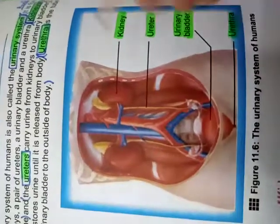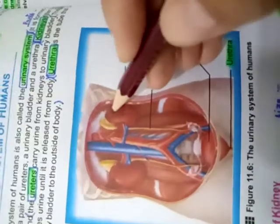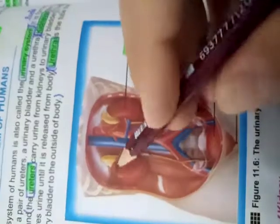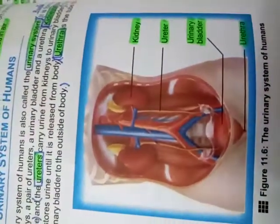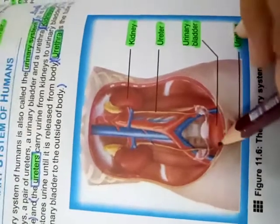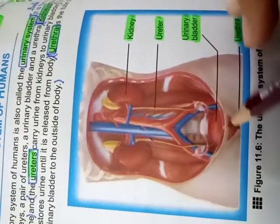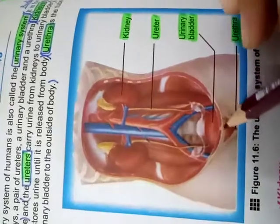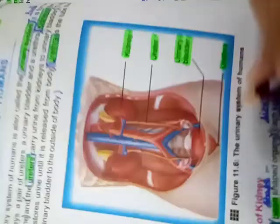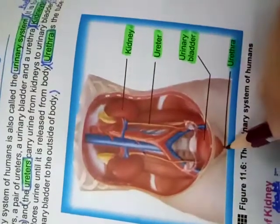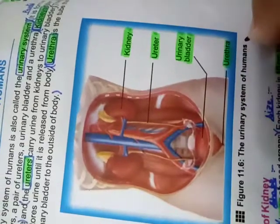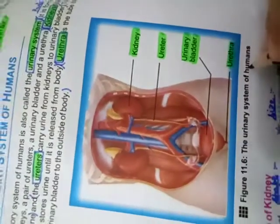Let's look at the diagram again. The kidney produces urine and filters the blood. That urine travels through the two yellow tubes — the ureters — down to the urinary bladder, the red pouch. All the urine is stored inside the urinary bladder. After storage, the urine passes through the tube-like structure — the urethra — and is excreted out of the body. This is the urinary system of humans, also called the excretory system.